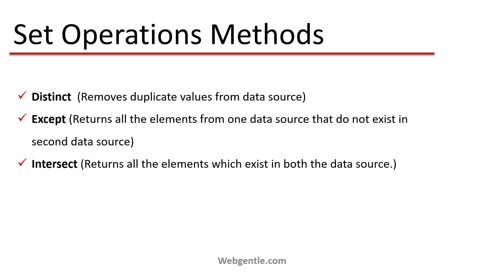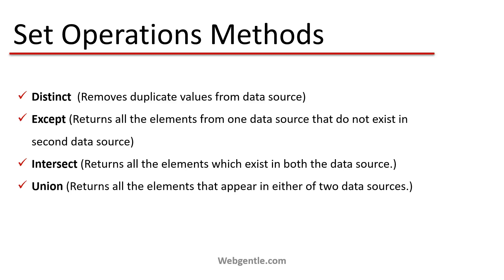The third method is Intersect, which returns all the elements that exist in both data sources. You have two data sources and need to fetch only the common records — those available in both. The last method is Union, which returns all the elements that appear in either of the two data sources. Basically, it combines all of the data sources and produces a single data source.